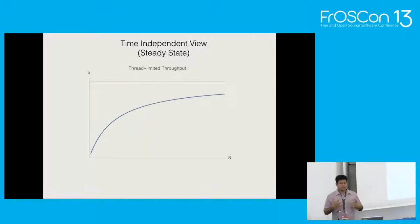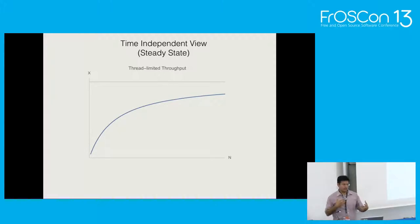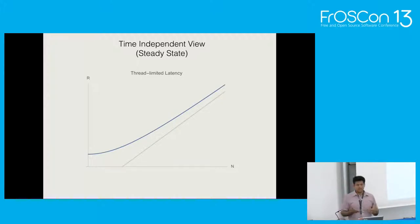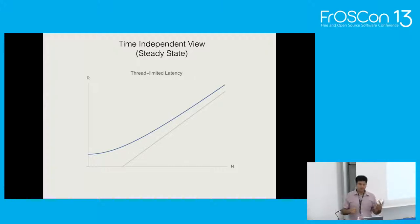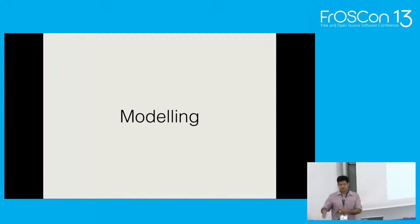First of all, we need to take a time-independent view. We need to consider the steady state of the application—we cannot have variations while collecting all this data. That's why time series doesn't work for performance analysis; we need a time-independent view. Within the frame of queuing theory, we can expect that a throughput curve has a concave shape compared to user load, and response time looks like a hockey stick handle, increasing linearly with user load. We are now discussing a completely different model than the M/M/1 example I showed before.